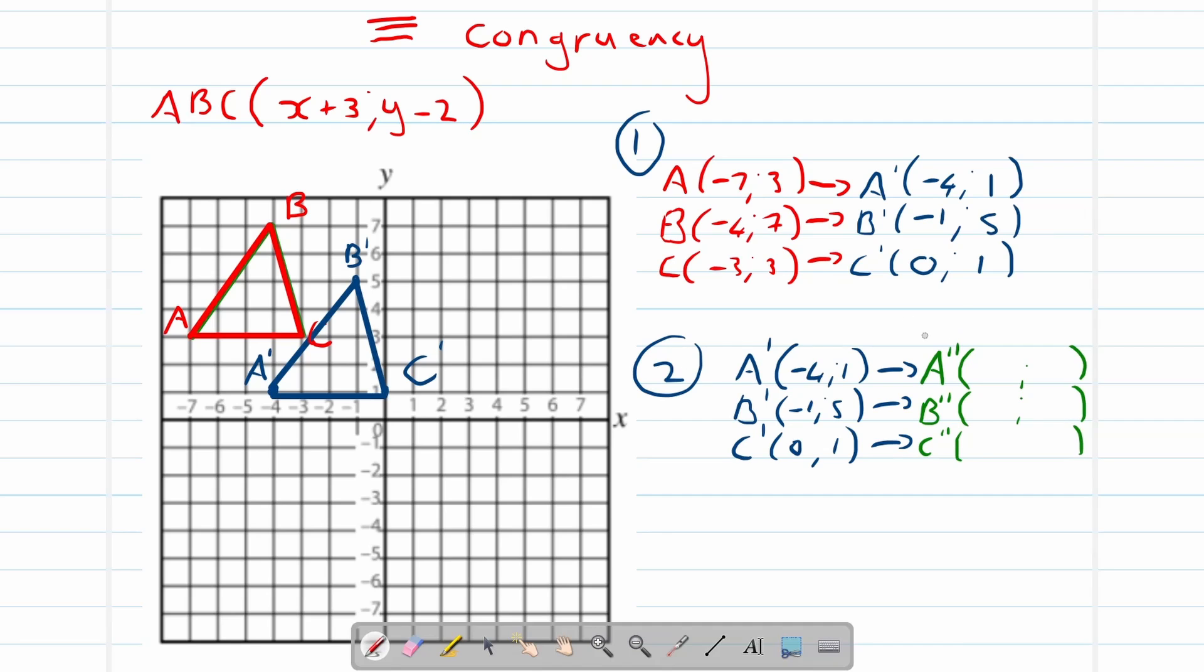So where it was negative 4, it became 1. Where it was negative 1, it became 4. When it was 0, it became 5. For the y values, where it was 1, it became negative 3. Where it was 5, it became 1. Where it was 1, it became negative 3 once again.